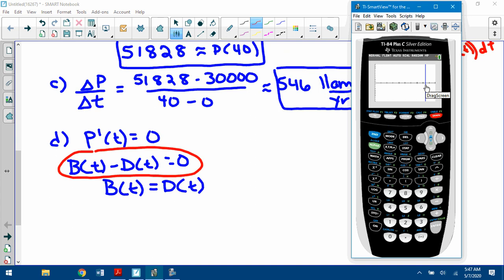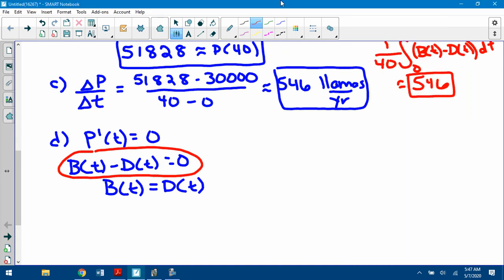Found it. So, if you want, you can do y2 equals 0. Sometimes that's helpful because then I can just do second calc intersect. Second calc intersect. First curve, second curve, guess. 33.480 it looks like.